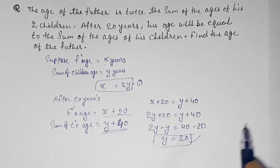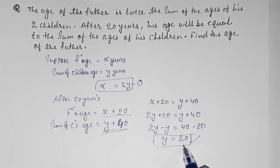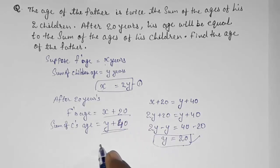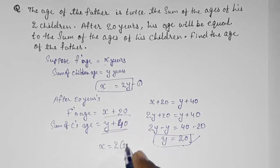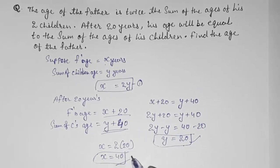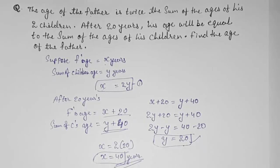Since x equals 2y and y equals 20, we get x equals 2 times 20 equals 40. So the age of the father is 40 years. Thank you so much for watching. In my next video I am going to bring more sums related to pair of linear equations in two variables.